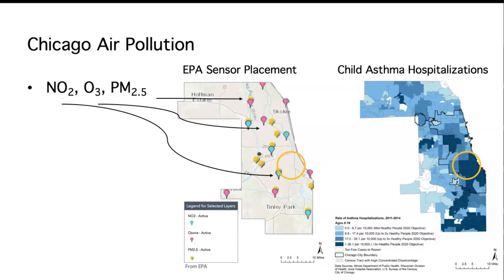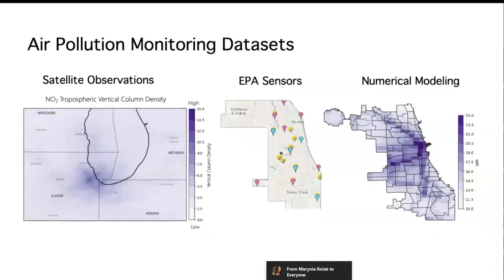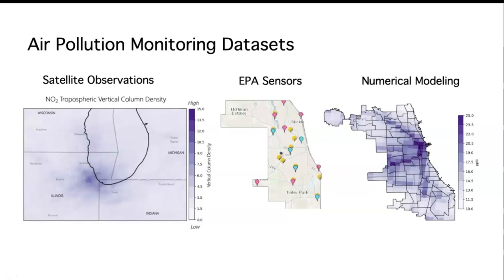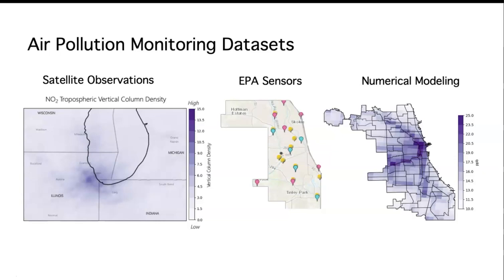How do we figure out what's happening with Chicago air pollution in areas that we're not even monitoring? The way I approach this is by looking at Chicago air quality through a variety of datasets — not only the EPA sensors found around the city, but also satellite observations. We have geostationary satellites that take snapshots of continuous air quality maps every single day. We also have tools like numerical modeling, and there are other kinds of numerical or statistical models that people use to figure out what's happening in between sensors, at a more neighborhood-scale analysis.